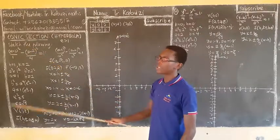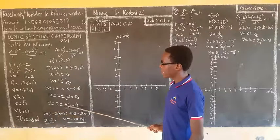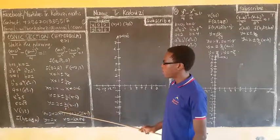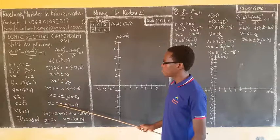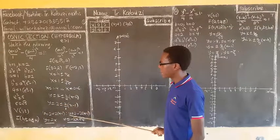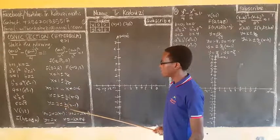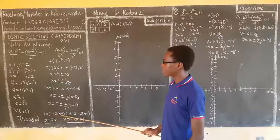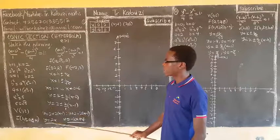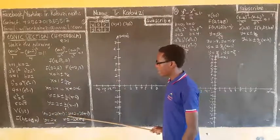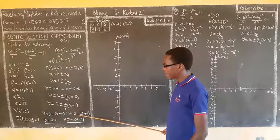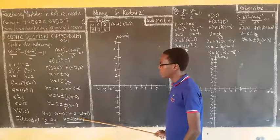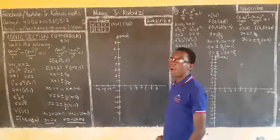The asymptotes are of this form. It's y minus k, which is two, then b over a because the axis is going to be horizontal transverse axis, then times x minus h which is one. When you open, if I have two plus two times this, then here I have two minus two times this.